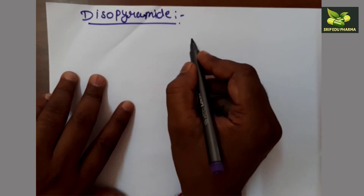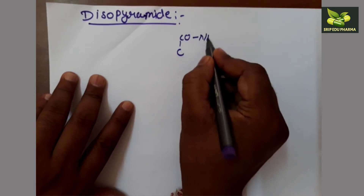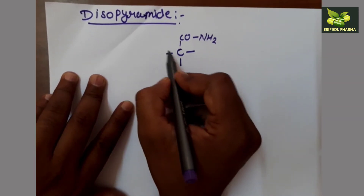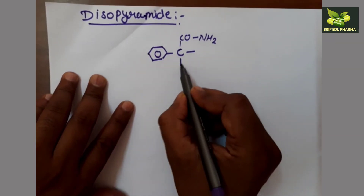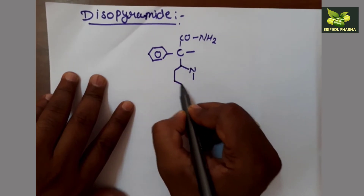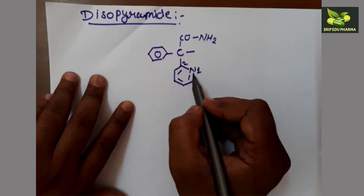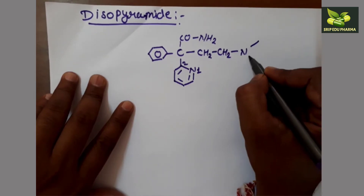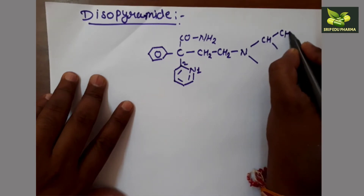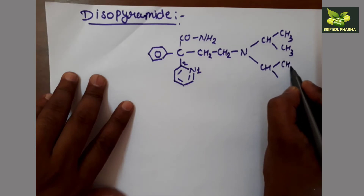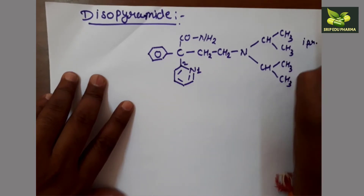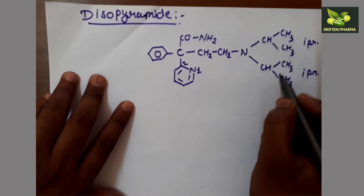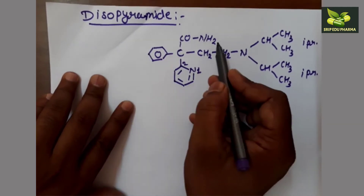Acetamide is CH₃-CO-NH₂. The three hydrogens from the methyl group of acetamide have been substituted: the first hydrogen is replaced by a phenyl group; the second hydrogen is replaced by a 2-pyridinyl group — the point of attachment is at the second position of pyridine; and the third hydrogen is replaced by an ethyl group bearing an N,N-diisopropylamino group. So we have a diisopropylaminoethyl group attached to acetamide along with a 2-pyridinyl group.